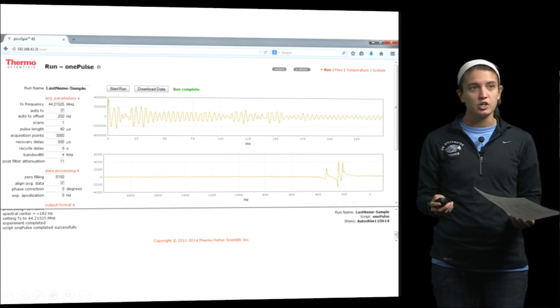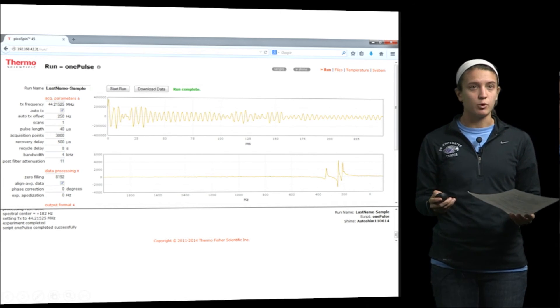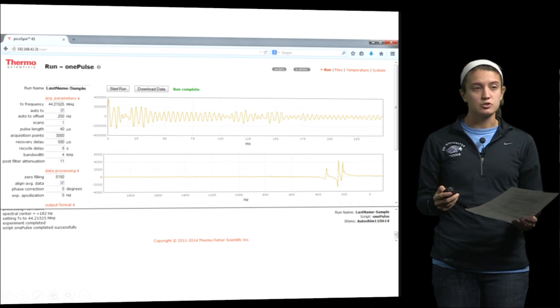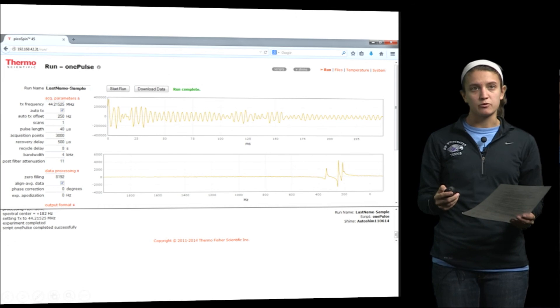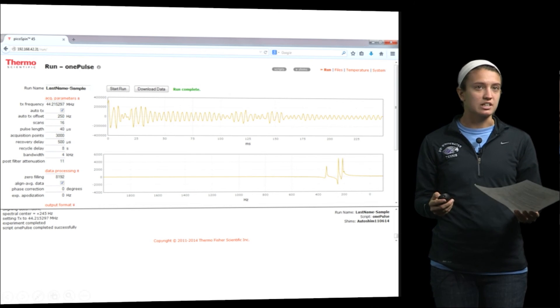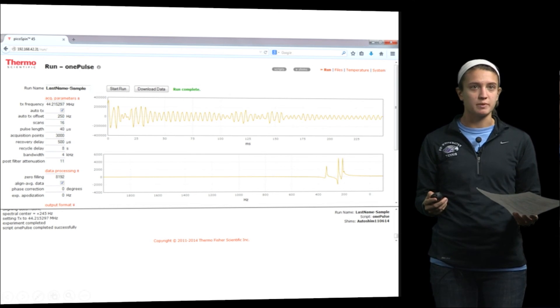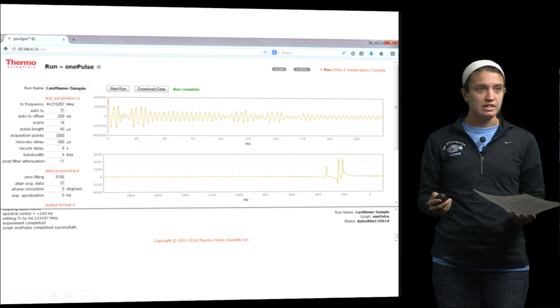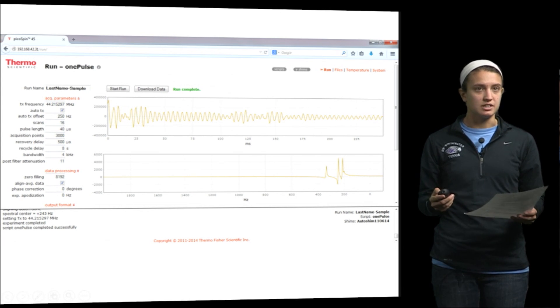Once you do have a good one, we are going to change the number of scans from 1 to 16 and we are going to change the minimum frequency to plot to negative 100 and the maximum frequency to plot to some number large enough to plot all of your peaks in your spectrum. So once we have made those changes, we click on start run again to obtain our final spectrum. You will know that it is completed because at the bottom of your screen it will say script one pulse is completed successfully.